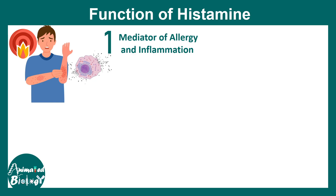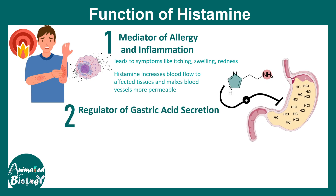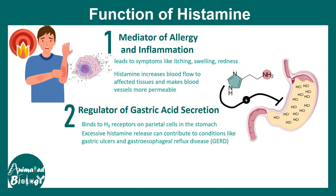Histamine is a potent mediator of allergic reactions and inflammation, leading to symptoms like itching, swelling, and redness. It increases blood flow through vasodilation, allowing other immune cells to invade the region of infection. Histamine also modulates acid secretion from the stomach by binding to H2 receptors on the parietal cells, leading to gastric acid secretion. Excessive histamine can cause gastroesophageal reflux disease (GERD) or gastric ulcers.